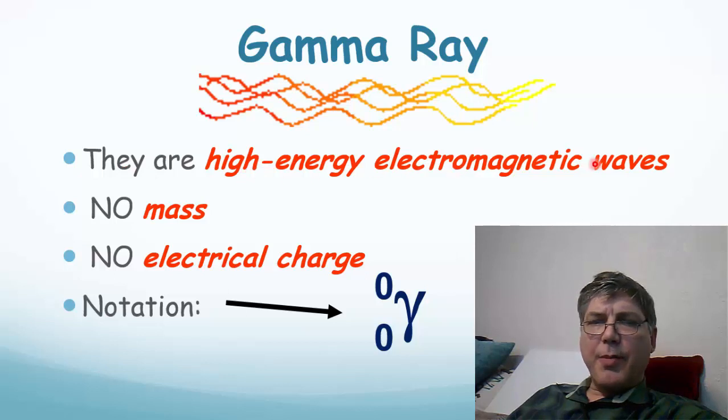Gamma rays are very high energy electromagnetic waves. They don't have mass or electric charge because, remember, they are not particles. They are just waves similar to light, but they just have a whole lot more energy and a much higher frequency.